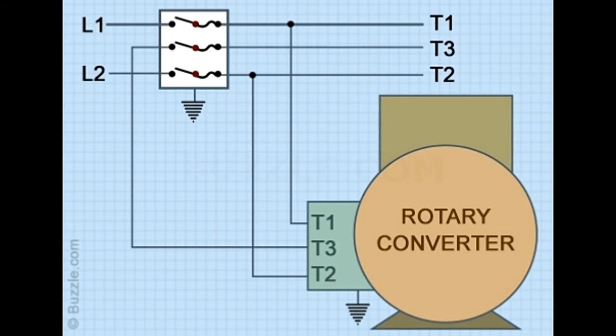Rotary phase converters. This electromechanical device basically works like a rotating transformer. L1, L2 equals single phase source voltages. T1, T2, T3 equals three phase output voltages. Note: T1 and T2 should always be utilized to operate magnetic controls.